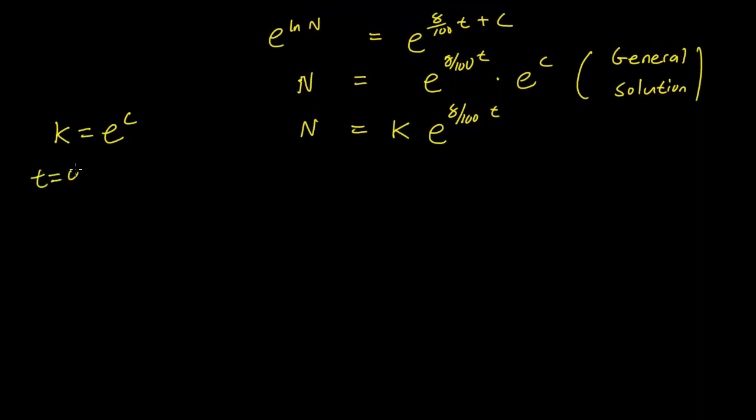Let's try to fit that in. When time was zero, Uncle Pennybags had $1,000 in his account. So 1000 equals k e to the 8 over 100 times zero.